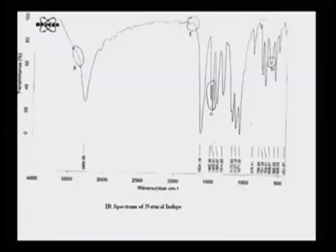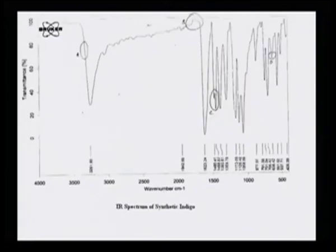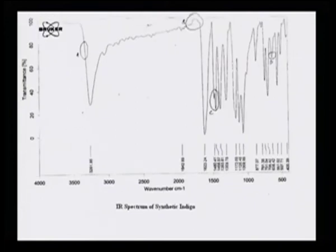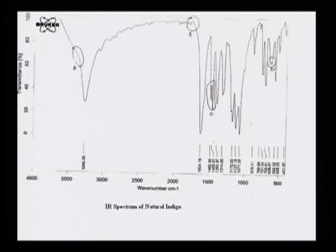If we look at an IR spectrum of natural indigo, there are certain portions marked A, B, C, and D that are quite different from the synthetic indigo IR spectrum. Although in one glance they both look alike, if one looks carefully the regions A, B, C, D marked in the synthetic indigo are quite different from those marked in the natural indigo. That is how IR helps to identify these molecules in more detail — all these peaks are absorption peaks.